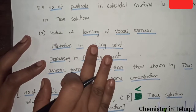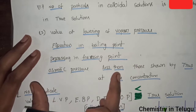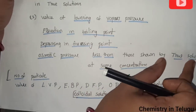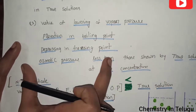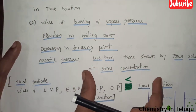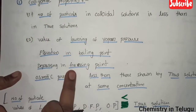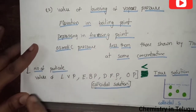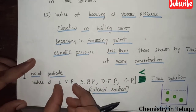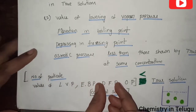Let's talk about the second point. The value of lowering — lowering vapour pressure, elevation in boiling point, depression in freezing point, and osmotic pressure. At the same concentration, the number of particles, lowering vapour pressure, elevation in boiling point, depression in freezing point, and osmotic pressure are all considered.